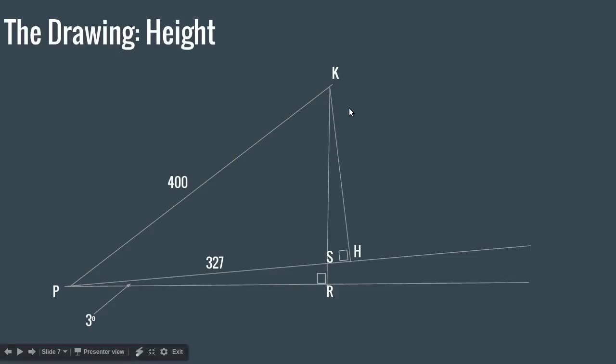And finally, we want to find the height of the kite from the ground, perpendicular to the ground. So from the kite, we draw a perpendicular line to the ground, and we call that KH. We want to find KH.